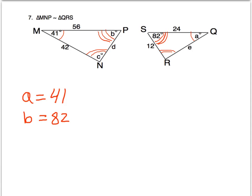And now using the triangle sum theorem, let's just look at triangle MNP. We know 41 degrees is angle M, angle P is 82 degrees, and that means C must be equal to 57 degrees. And the reason why is the triangle sum theorem. The angles in a triangle must add up to 180. So here we have A, B, and C.